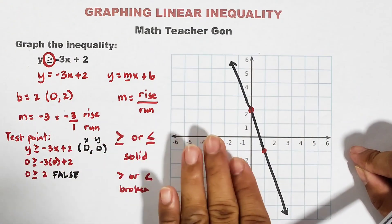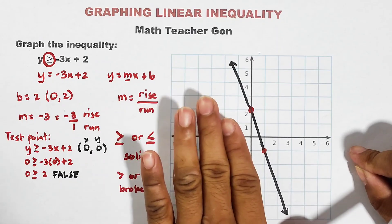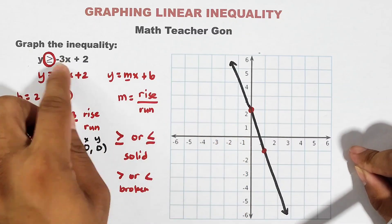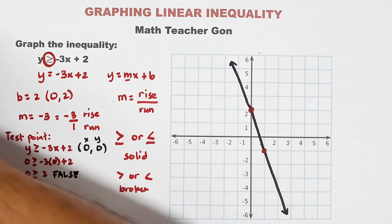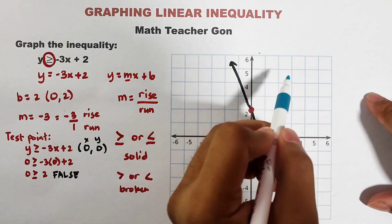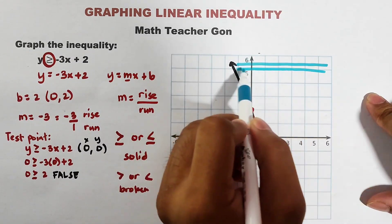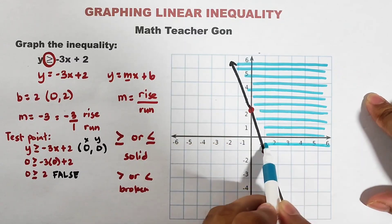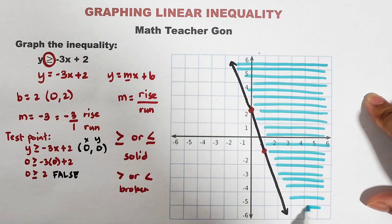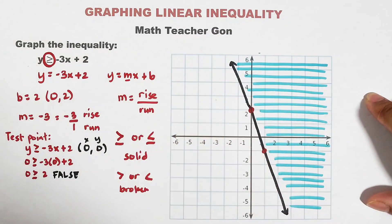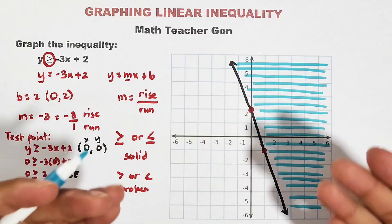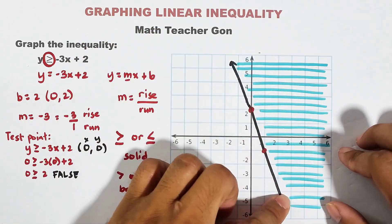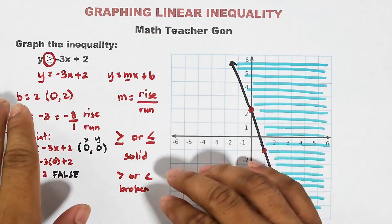Since the test point is located on the left side and gave a false statement, the left side is not the shaded part. The right side must be shaded. All the values located on the right side and on the solid line are the solutions of the given inequality — these are all the possible values that satisfy the inequality.